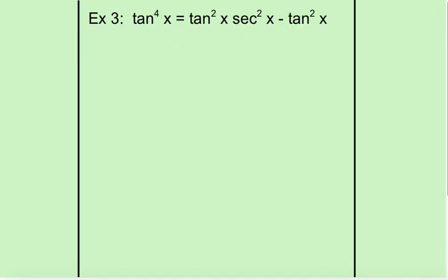Here's our third example. We have a tangent to the fourth of x. Definitely this is the more difficult side of the equation, so we'll start there. And we're going to do some factoring. So we're going to take out the GCF of tangent squared of x. What we're left with when we take out the GCF is we're left with the secant squared of x minus 1. Now we look inside the parentheses.